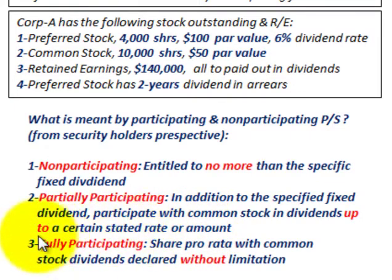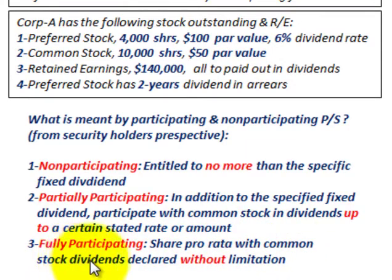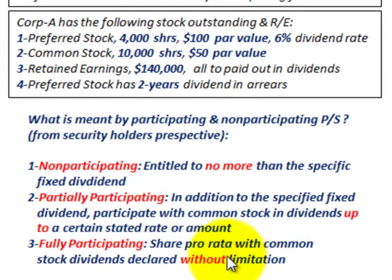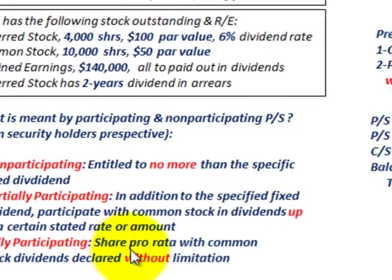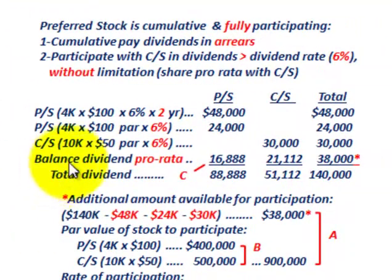Where you've got fully participating, that's where you're going to share pro rata with the common stockholders for the dividends declared without any limitation. For our example, we're going to look at the fully participating preferred stock.